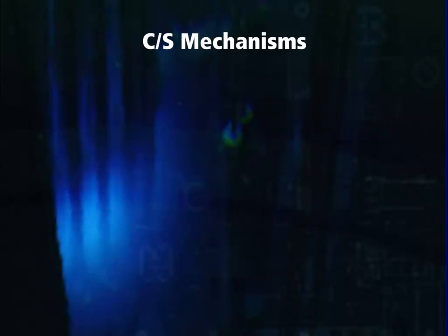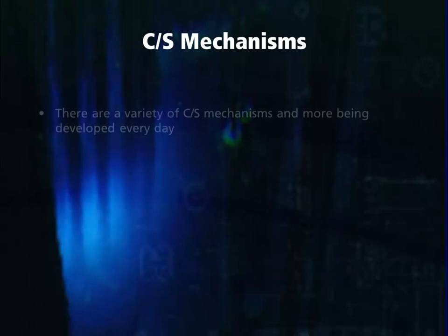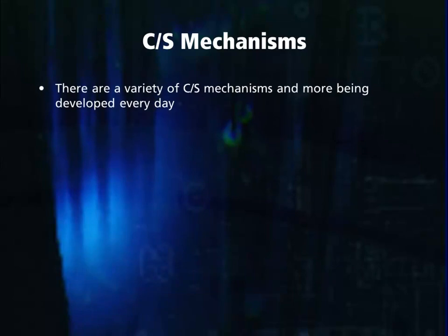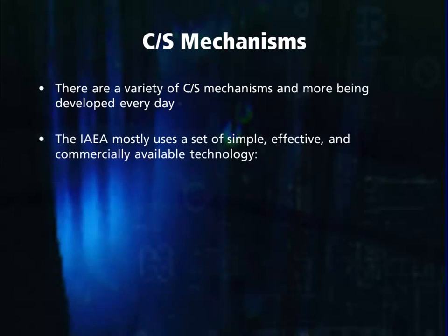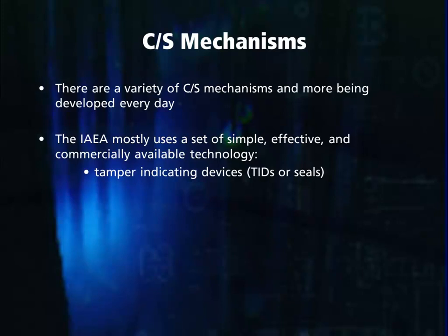To implement containment and surveillance, the IAEA uses a variety of containment and surveillance mechanisms. More of these mechanisms are being developed every day. The IAEA mostly uses a set of simple, effective, and commercially available technology. This technology includes tamper indicating devices, commonly referred to as TIDs or seals.